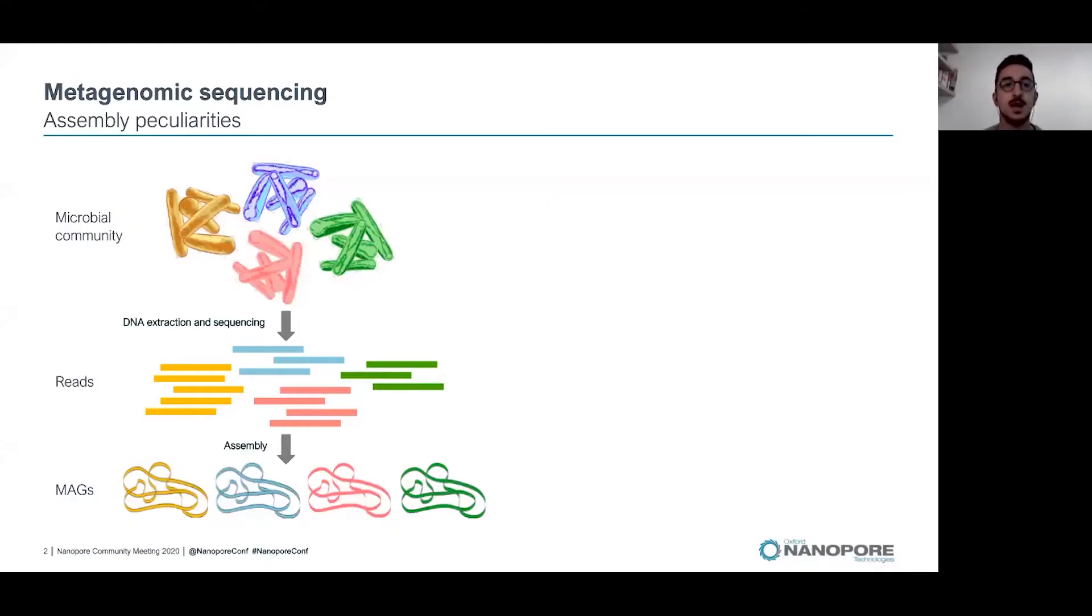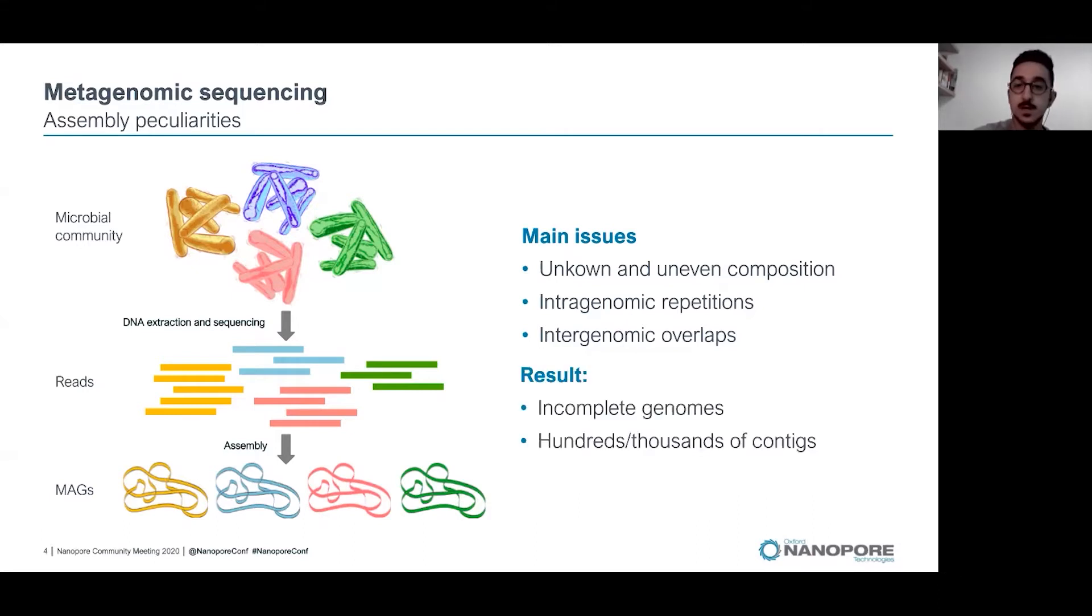Metagenomic assembly is a special case of assembly in which we start from a microbial community and ideally we want to have a single genome for each microorganism present in the community. But we have some issues. We start from an unknown and uneven composition of microorganisms, then we have intragenomic repetitions found in each genome, and sometimes we have intergenomic overlaps between closely related species. Using traditional sequencing platforms, it results in incomplete genomes with hundreds or thousands of contigs.